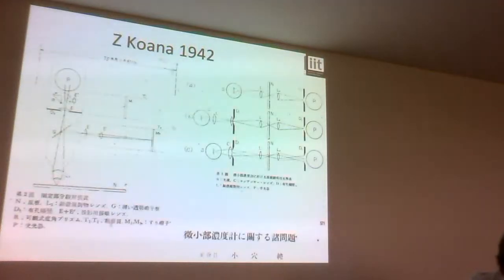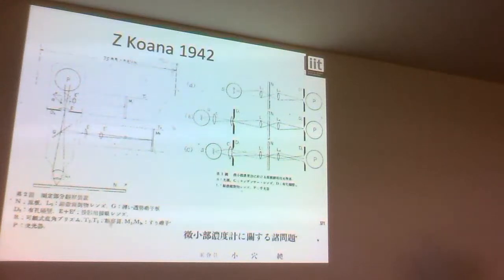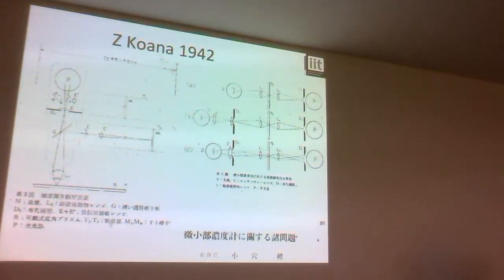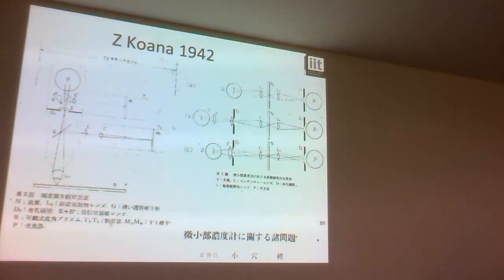So that was 1940. Another early example is a paper by Koana — a Japanese paper published in 1942 — which does use a real confocal pinhole. The justification for using the pinhole in that case was getting rid of scattered light: they were doing microdensitometry and needed to measure light intensity accurately, so using a pinhole allowed them to get rid of scattered light and get a more accurate measurement.